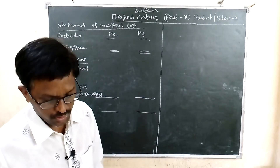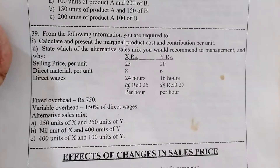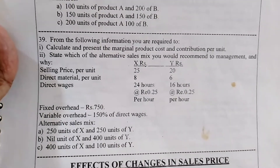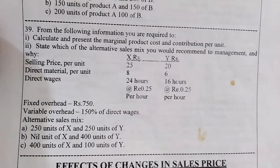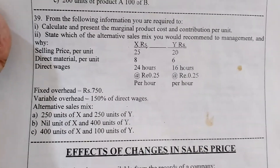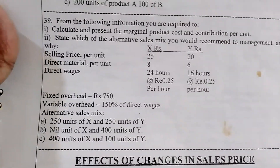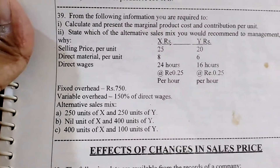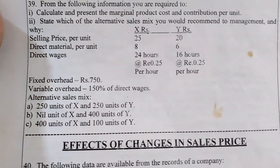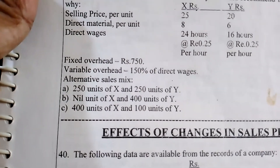From the following information, you are required to calculate the marginal cost per product and contribution per unit, and state which alternative sales mix would be recommended to management and why. Selling price: product X is 25 rupees, Y is 20 rupees. Direct material: 8 rupees and 6 rupees. Direct wages: 24 hours at 25 paisa per hour for X; 16 hours for Y at 25 paisa per hour. Fixed overheads are 750 rupees; variable overheads are 150% of direct wages. Alternative sales mixes: A) 250 units of X and 250 units of Y; B) X is nil, Y is 400 units; C) 400 units of X and 100 units of Y.